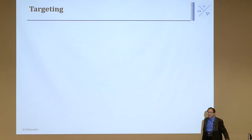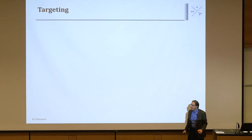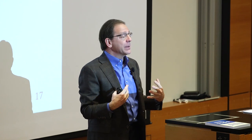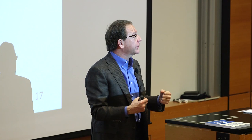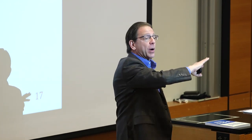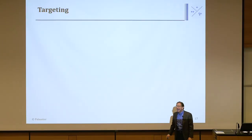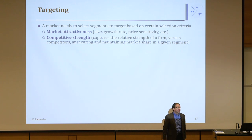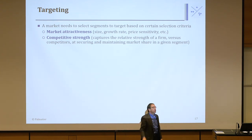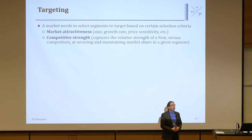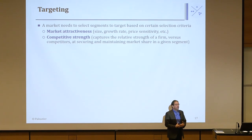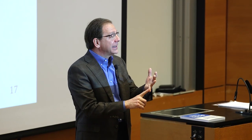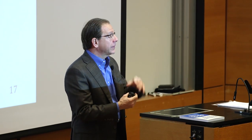Targeting: we finished the segmentation step. Segmentation involves cutting the market like a pie — finding everyone's needs and benefits, doing factor analysis to reduce questions, cluster analysis to group people, and naming them. Now I have to decide which slice of pie to eat — which segment to go after. We use two criteria: the attractiveness of the segment, and our own firm's strengths. A segment that's only 2% of the market might be too small for a big firm to spend resources on.